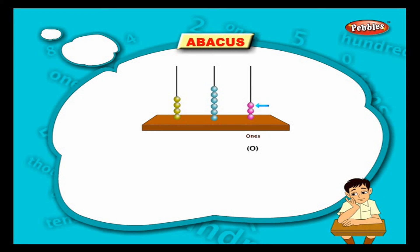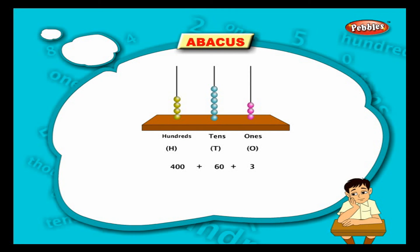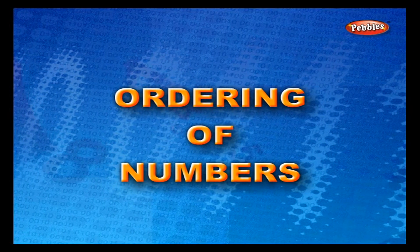Here there are three pink balls in the ones column — it means there are three ones. There are six blue balls in the tens column — it means there are six tens. There are four green balls in the hundreds column — there are four hundreds. Therefore, four hundreds plus six tens plus three ones equals four hundred and sixty-three. We write this as 463.